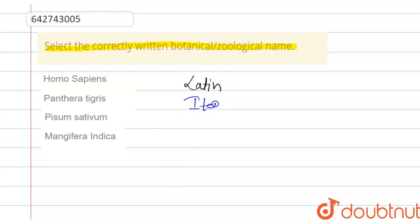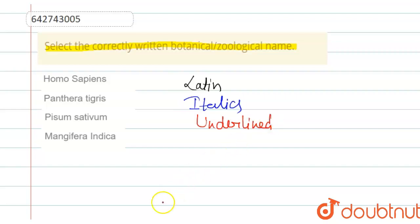If you talk about the zoological or botanical name, that is the scientific name, it is written in Latin and also written in italics. The scientific name is also underlined.